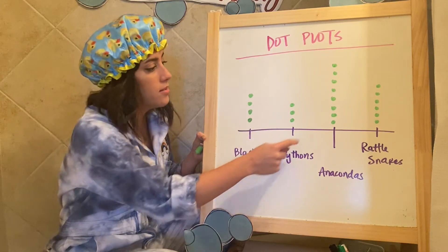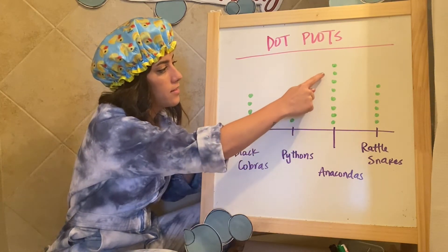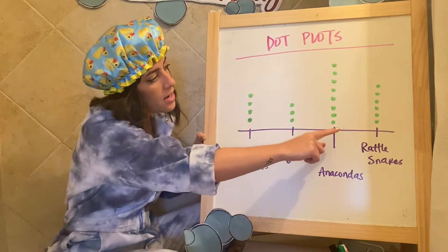So you can see here that there are four black cobras. There are three pythons. There are one, two, three, four, five, six, seven, eight anacondas. And then there's one, two, three, four, five, six rattlesnakes.